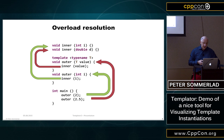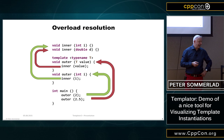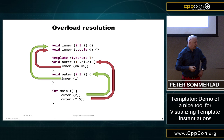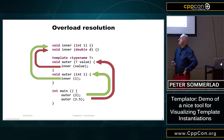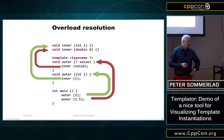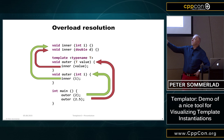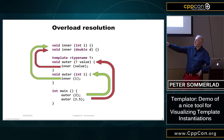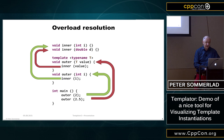Another problem is overload resolution, and that's a particular problem in IDEs. Let's say we have two overloads of function 'inner' — one for ints, one for doubles — a template function 'outer' that takes any kind of type value and calls 'inner', and a non-templated overload of outer for ints. If you call outer with an int, the compiler selects the non-template overload. If you call outer with a double, it calls the template function, and because T is deduced as double, it calls inner with a double value.